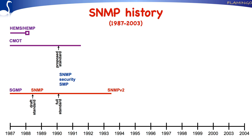Around that time, it also became apparent that OSI protocols would not automatically replace the Internet Protocol Suite, and work on CMOD was therefore stopped. The status of the CMOD proposal was moved to historic. Let's hear from Dan Ramaskanu, who has been IETF Operations and Management Area Director for many years, to learn why CMIP and CMIP over TCP failed.